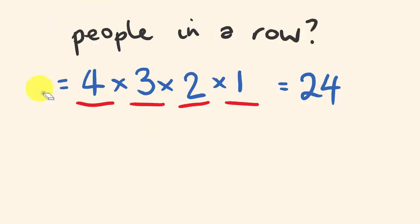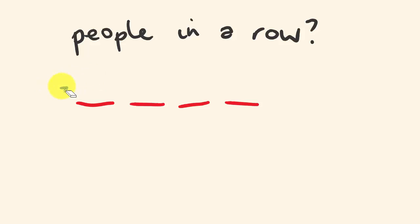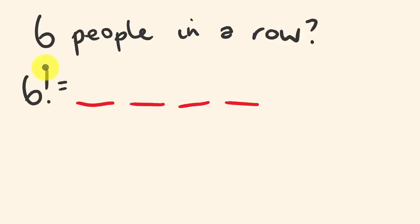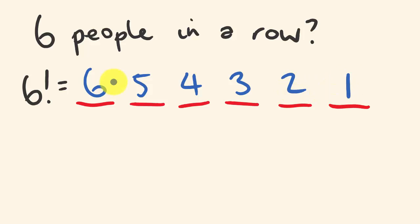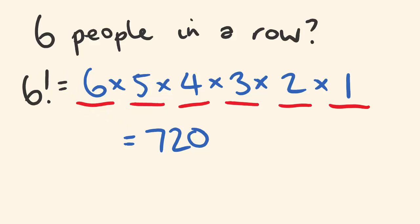Here's an example: how many different ways can we arrange six different people in a row? This equals six factorial — six times five times four times three times two times one. If you multiply these out, you get 720 different ways.